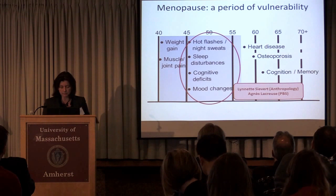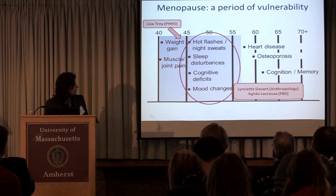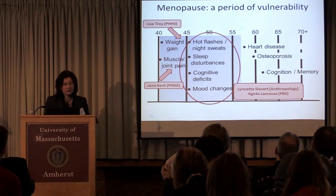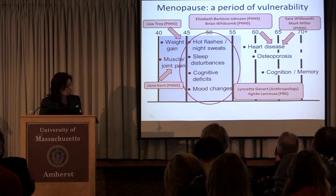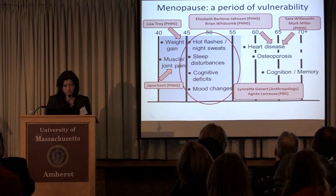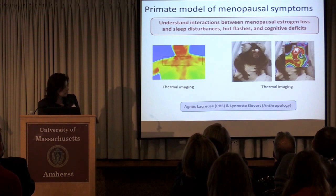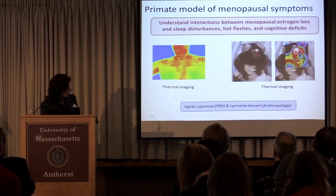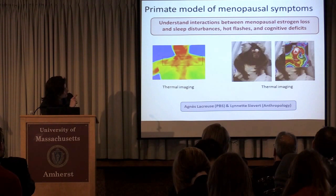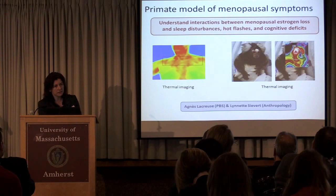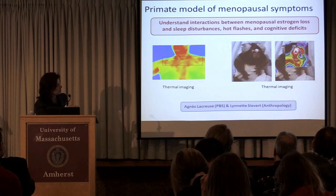There are many people at UMass who work on other systems and how they are affected by menopause, and we have close interactions with this group to understand menopause in its global context. As an example of a more translational approach, with Lynette Sievert we use thermal imaging to detect hot flashes in female marmosets and women, in an effort to understand the interactions between hot flashes, sleep disturbances, and cognitive deficits at menopause. The monkey model provides a means to look at the mechanisms underlying these relationships.